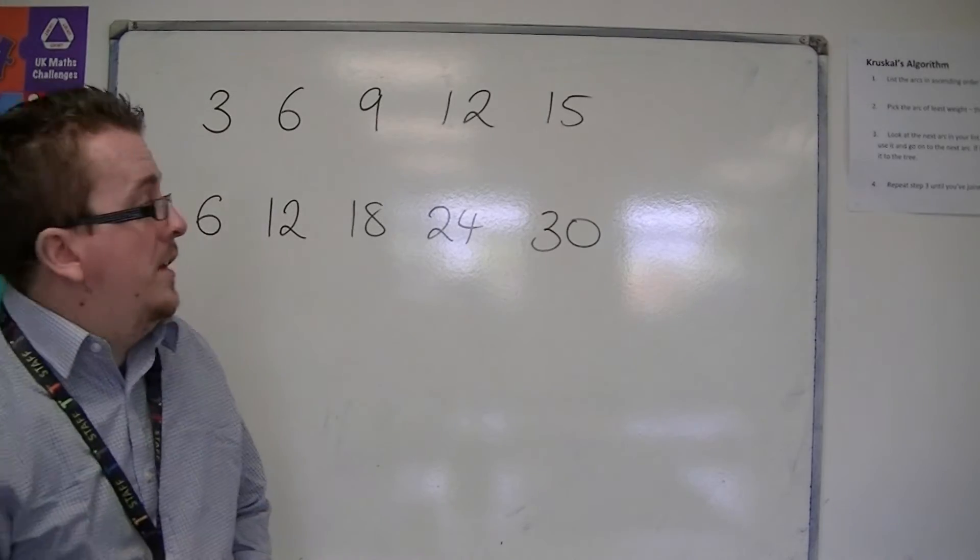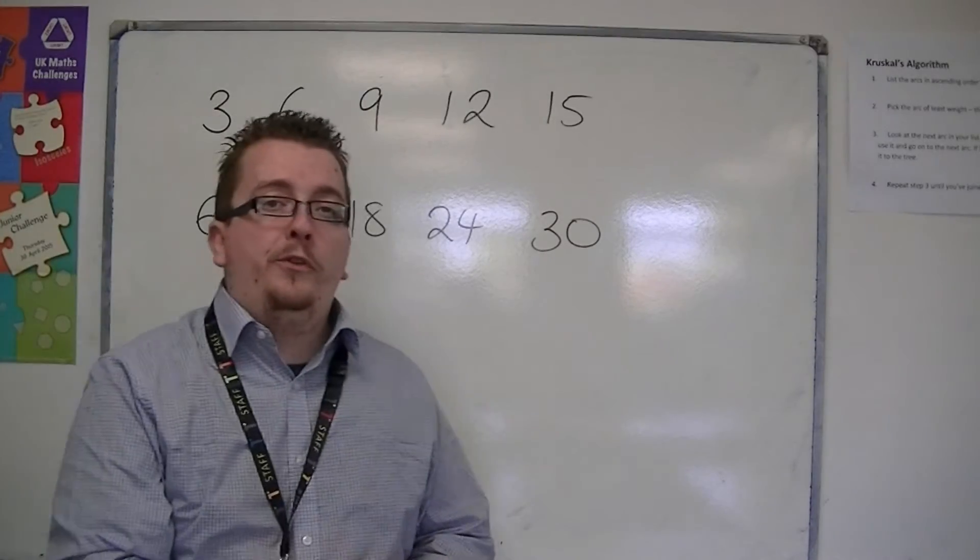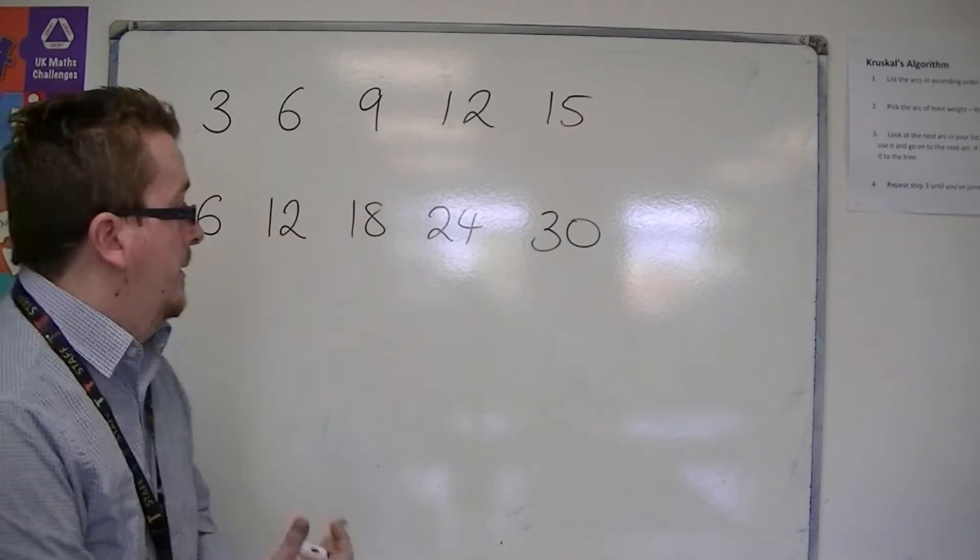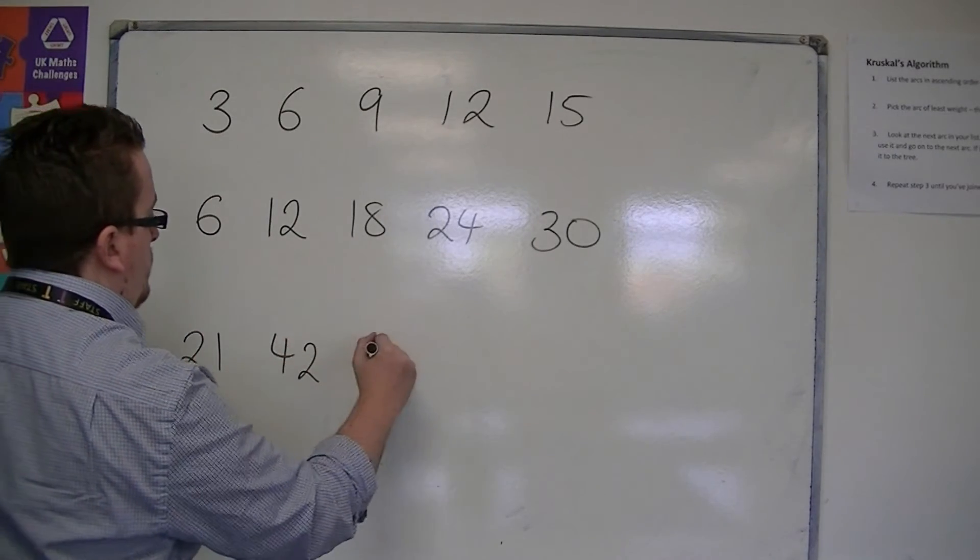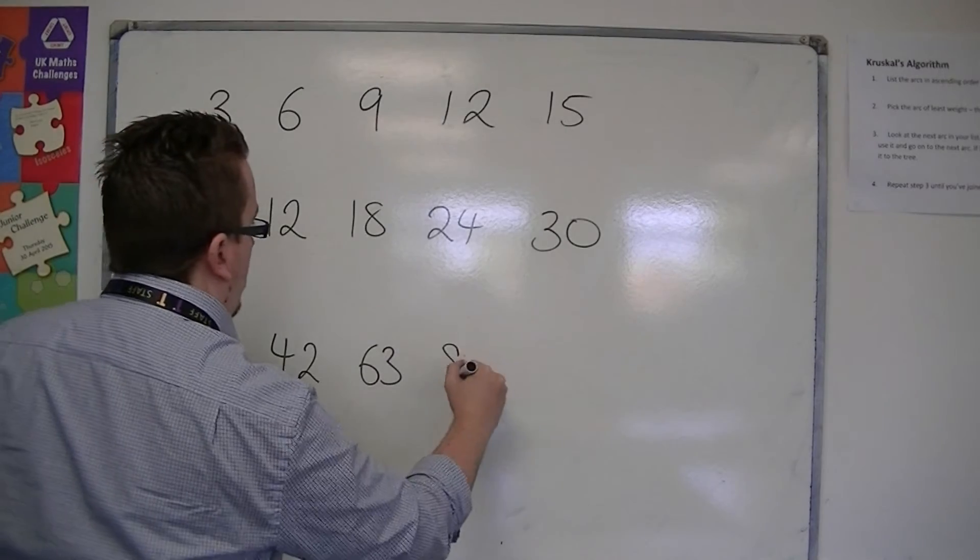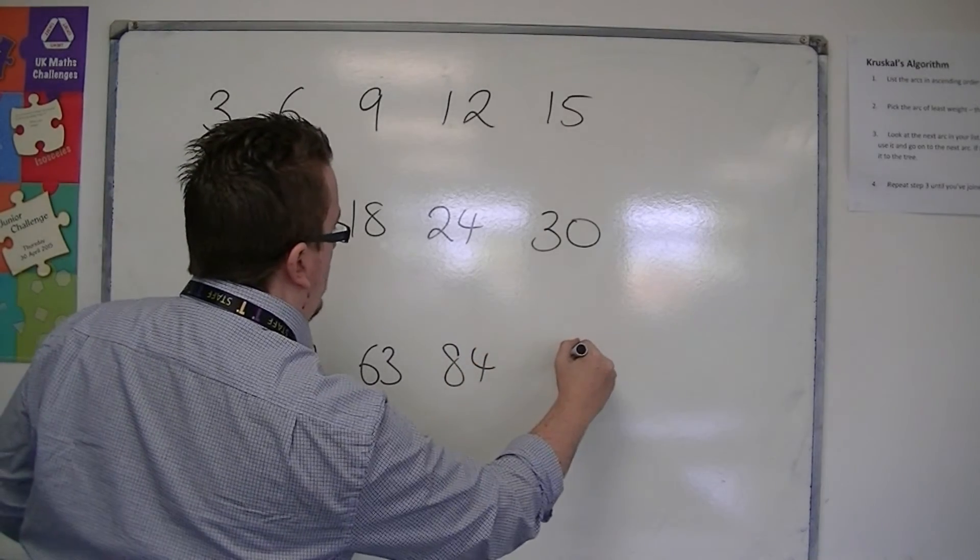If I wanted to write down the first five multiples of twenty-one, then I would have twenty-one, forty-two, sixty-three, eighty-four, and a hundred and five.